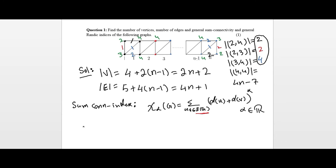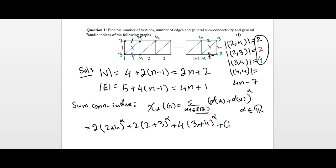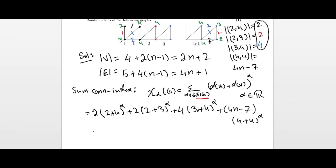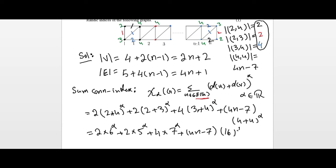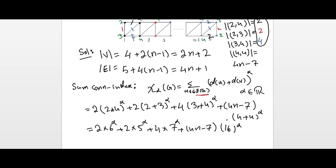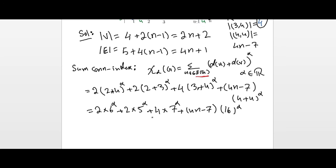Now we substitute this edge partition into the sum connectivity index formula. We have: 2 edges with degree sum (2+4)=6 raised to alpha, plus 2 edges with degree sum (2+3)=5 raised to alpha, plus 4 edges with degree sum (3+4)=7 raised to alpha, plus (4n−7) edges with degree sum (4+4)=8 raised to alpha. Simplifying: 2·6^α + 2·5^α + 4·7^α + (4n−7)·8^α. This is the general sum connectivity index for this graph structure.